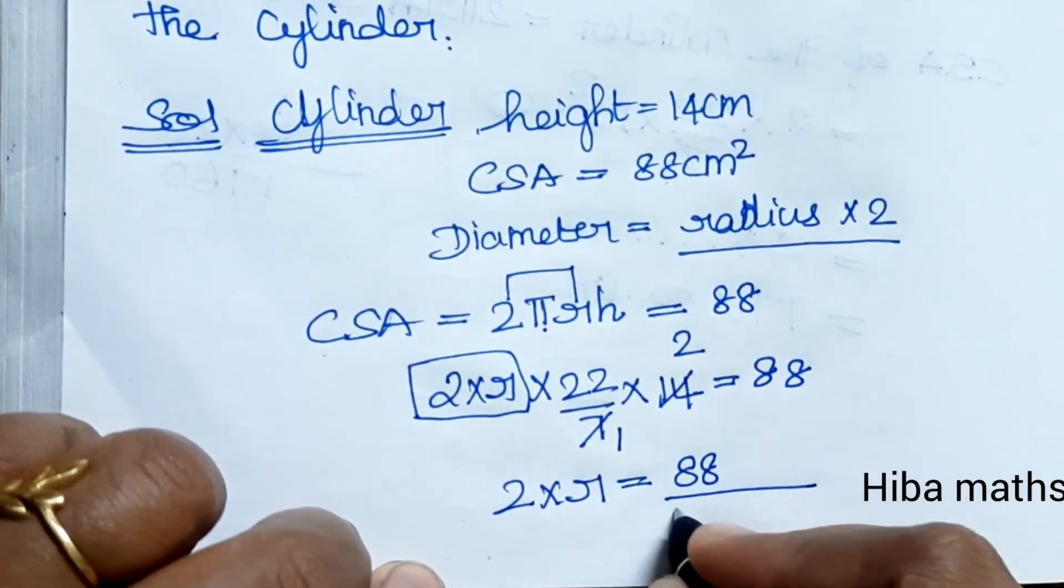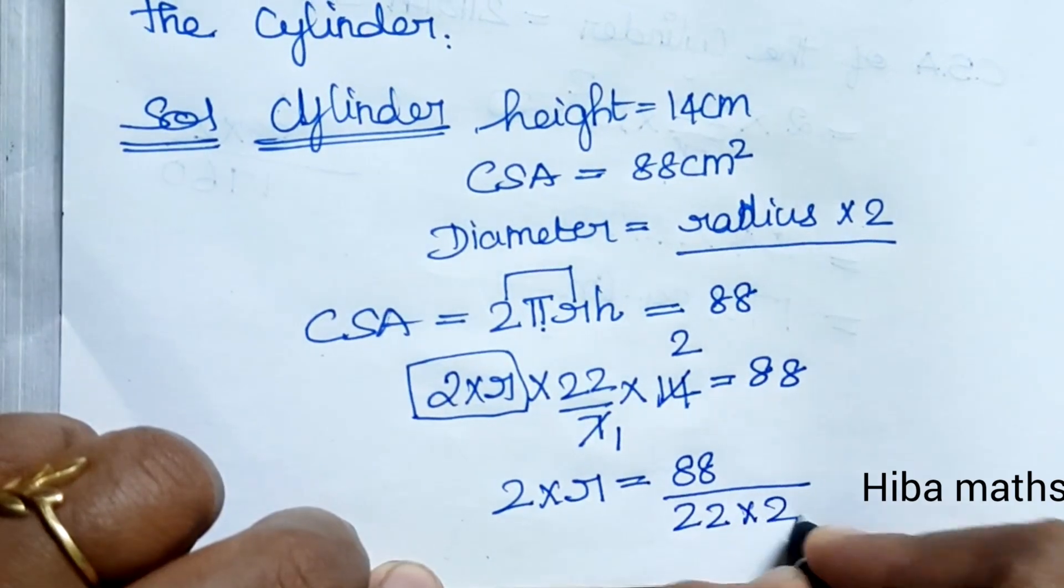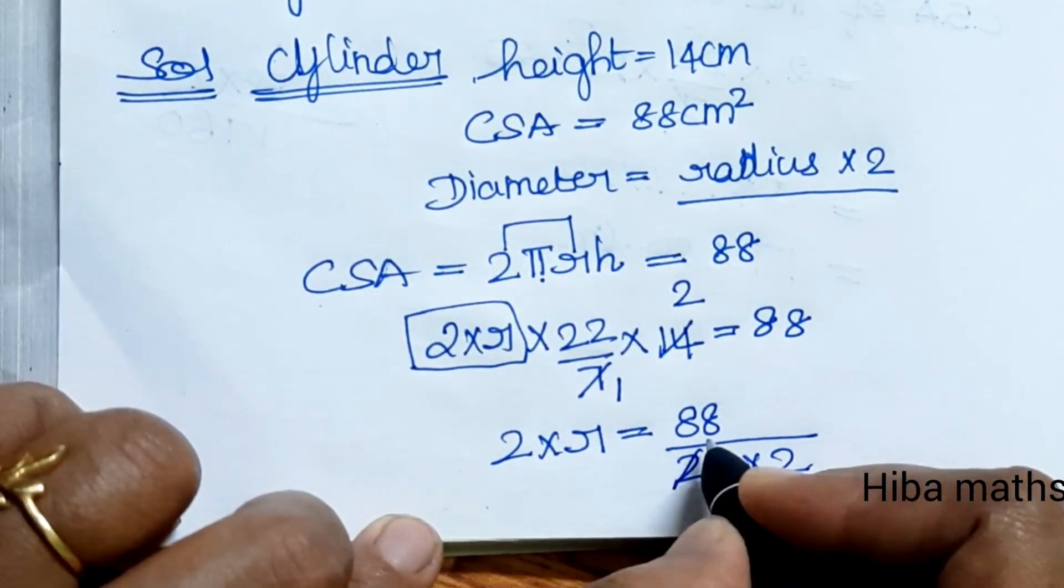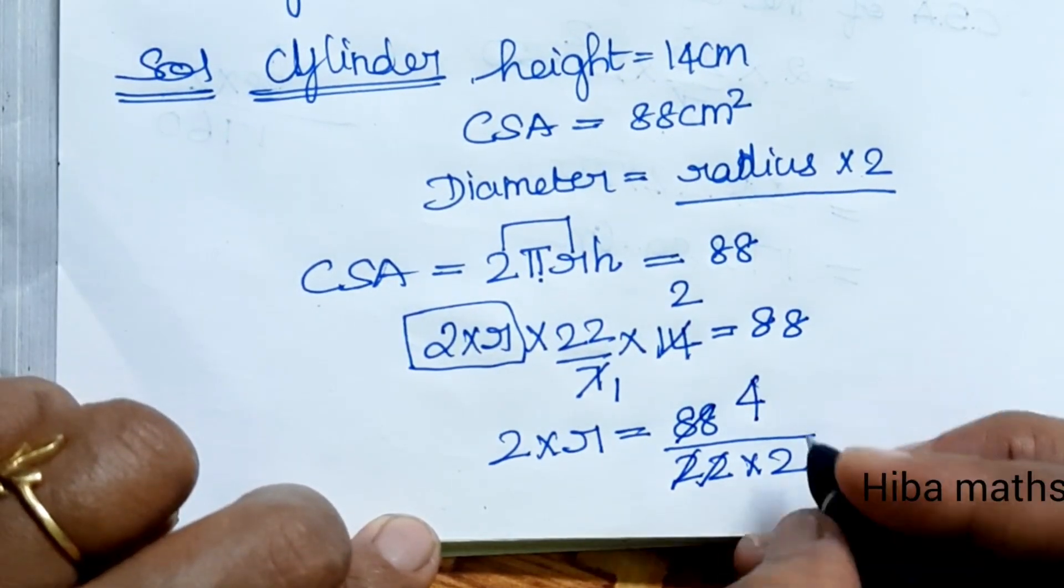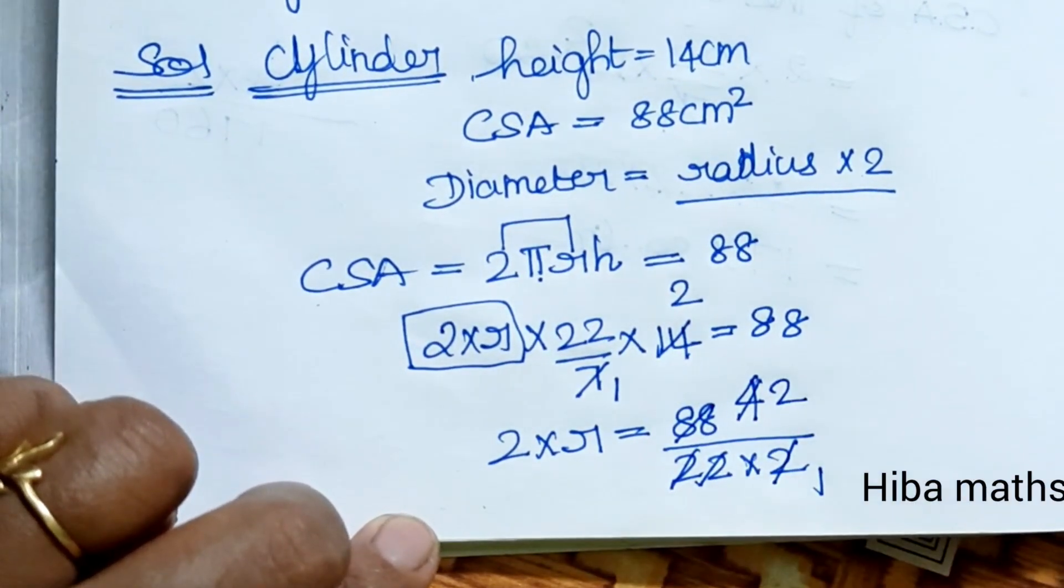22 times 2 equals 44. Since 4 times 22 equals 88, we get 2 into R (the diameter) equals 2.